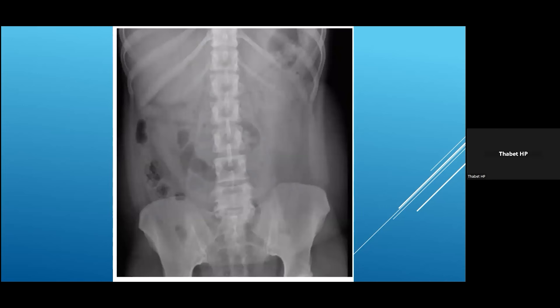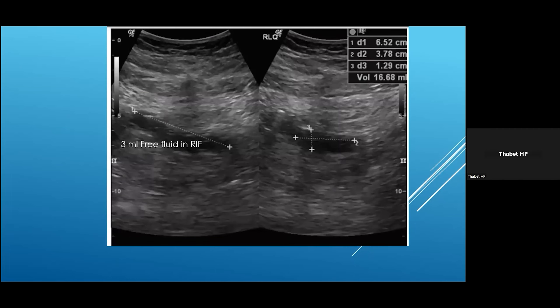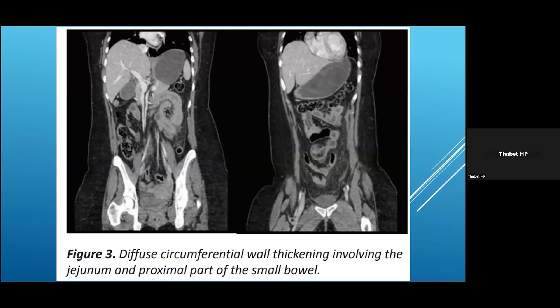We performed an abdominal X-ray along with a chest X-ray at the beginning. The abdominal X-ray didn't show something clear except for a faecolith of stool in the right upper area. We also did an ultrasound and found just three millilitres of free fluid in the right iliac fossa. Because of the increasing pain and inability to diagnose her — whether she had acute appendicitis or something else — we proceeded with a CT scan. Unfortunately, the initial CT scan showed almost no specific finding for her acute abdomen, and the final report indicated only diffuse circumferential wall thickening involving the jejunum and proximal part of the small bowel, suggesting enteritis more than other diagnoses.